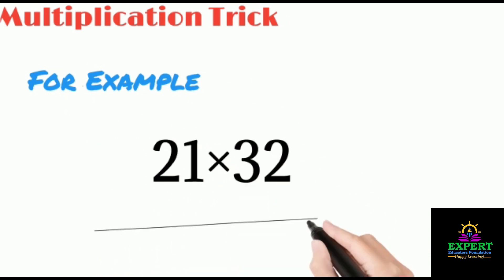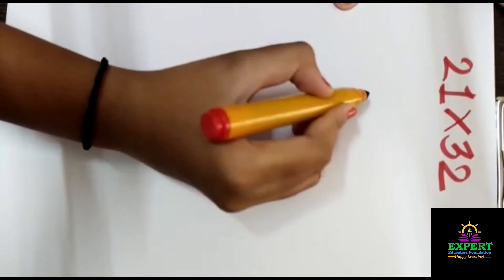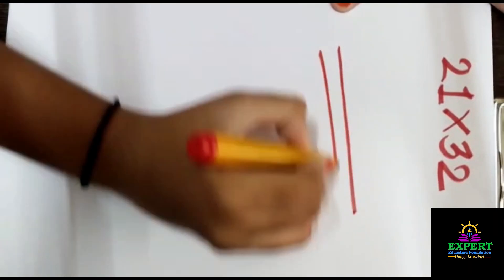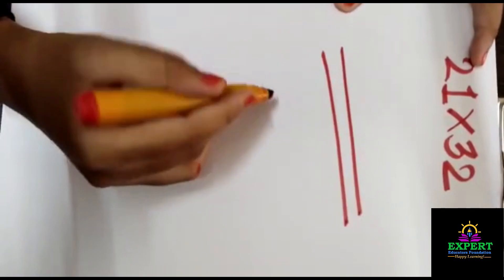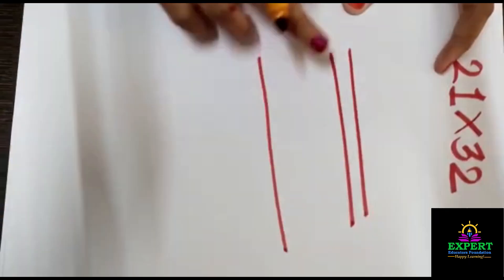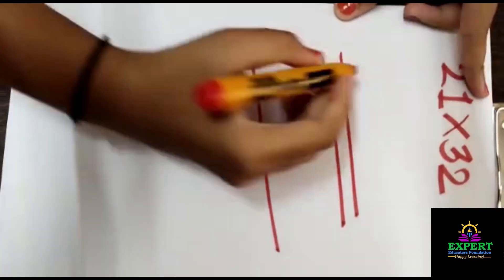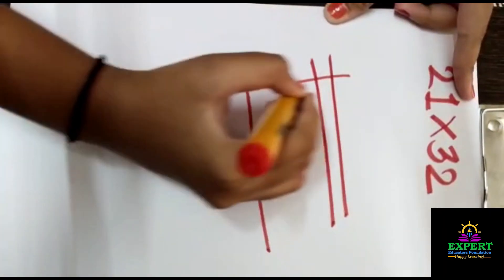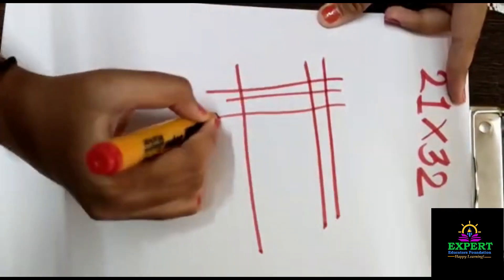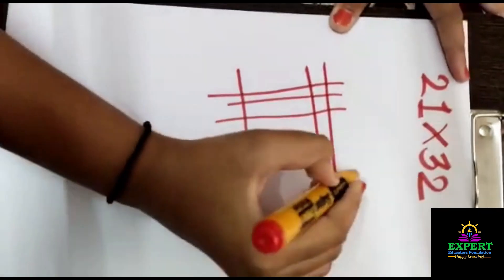21 multiply by 32. So how we will solve it? Here we have written 21, so we will make two lines over here, one and two. Here one is there, so we will make downside below one line. So here it is 2 and 1, which is 21. Here it is 32, so we will make opposite three lines: one, two, three.